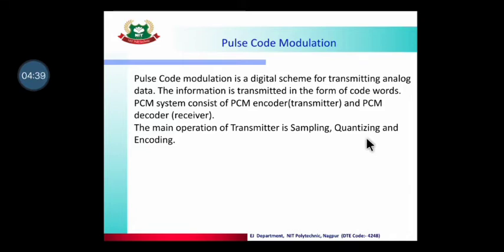When samples are in one range or one level, they are assigned a common value — a quantization level such as Q0, Q1, Q2. The number of samples will then have one single value, and in the last step, that one value gets converted to a digital value. This is the work of the PCM Transmitter.